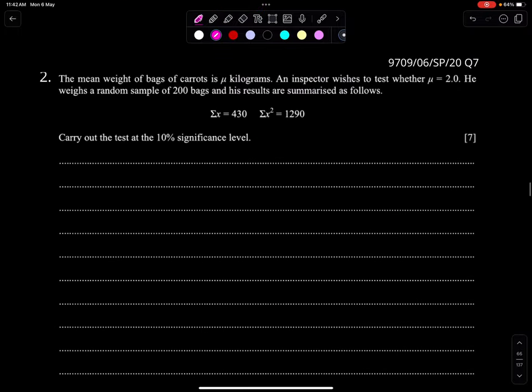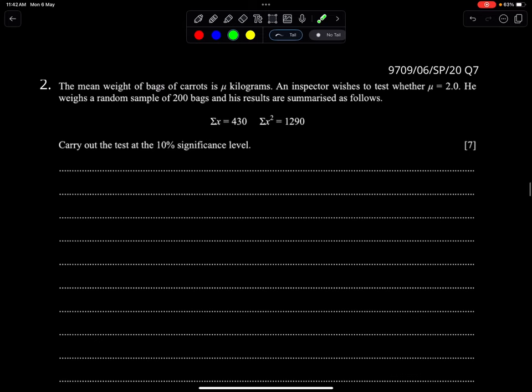Next question, this question is from specimen 20 paper 6 question 7. The mean weight of bags of carrots is mu kilograms. An inspector wishes to test whether mu is 2.0. This means whether mu is 2.0 or not, so this is H1 and this is H naught, and this is a two-tailed test. He weights a random sample of 200 bags.